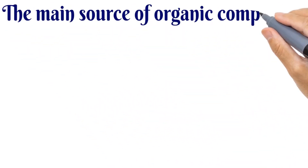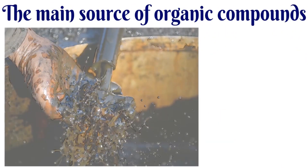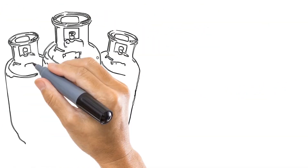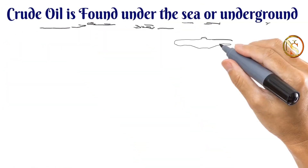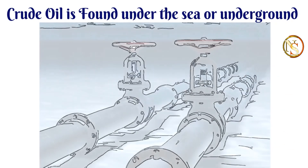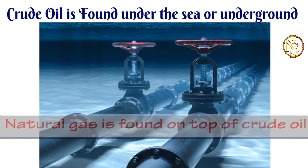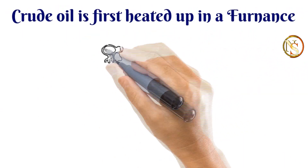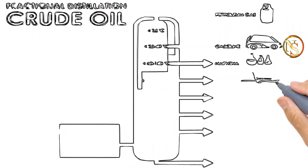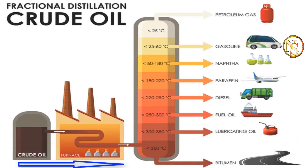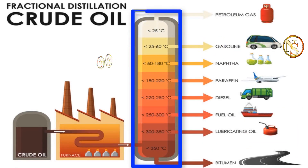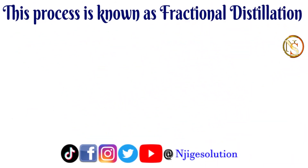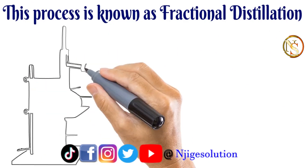The main source of organic compounds however is crude oil and natural gas deposits. Crude oil is found deep underground while natural gas is found on top of crude oil. The crude oil is first heated up in a furnace and the molecules with smaller molecular mass boil first and enter the fractionating column as gases. This process is known as fractional distillation of crude oil.